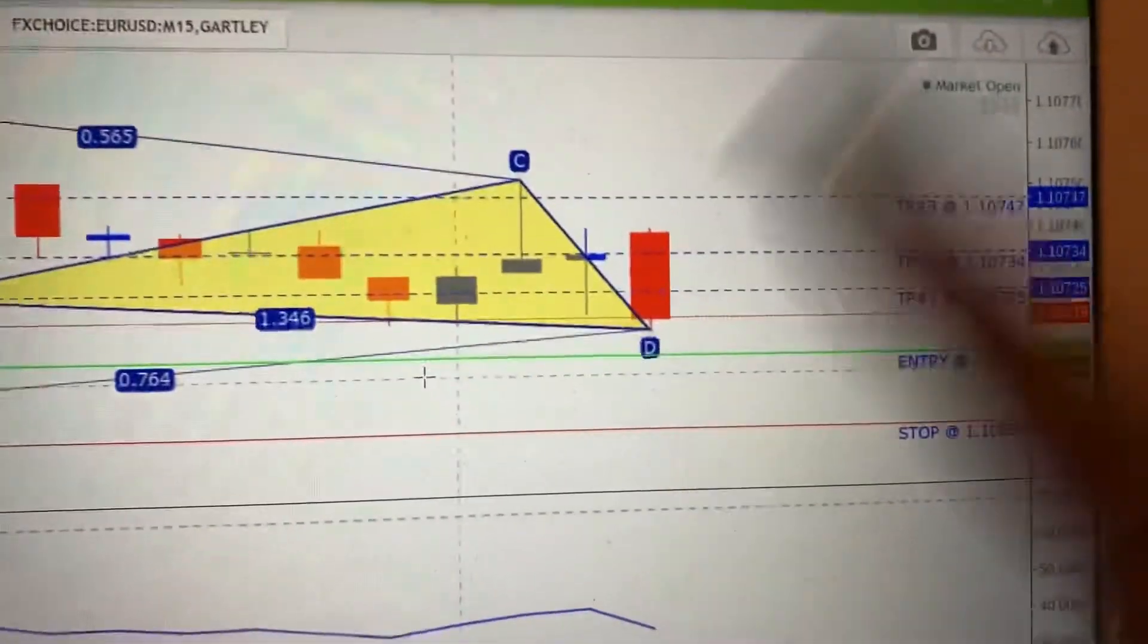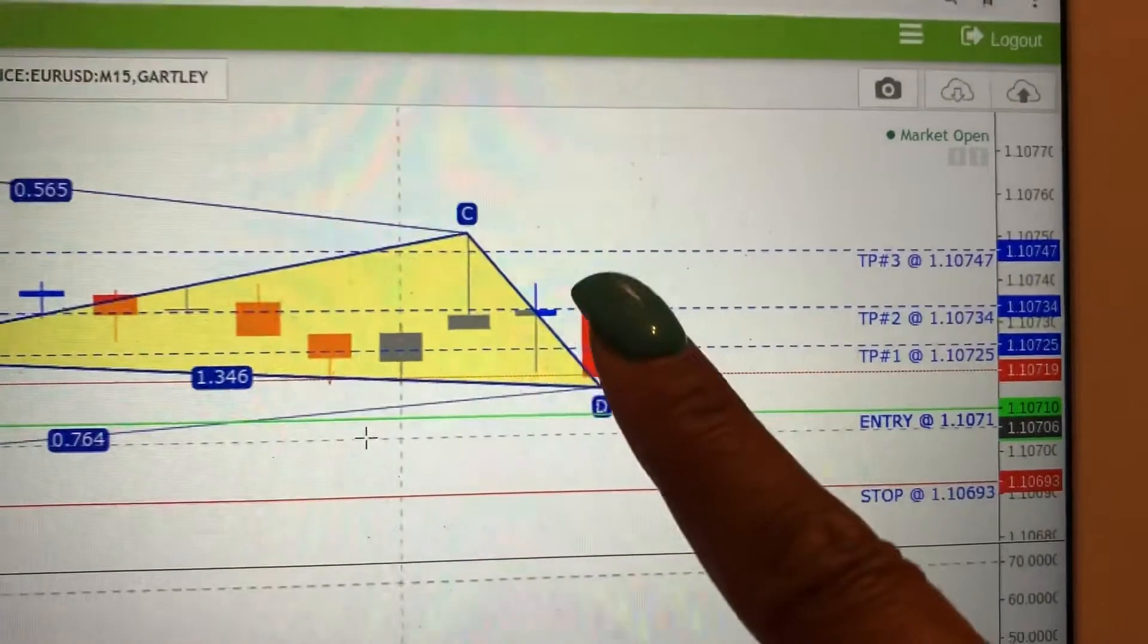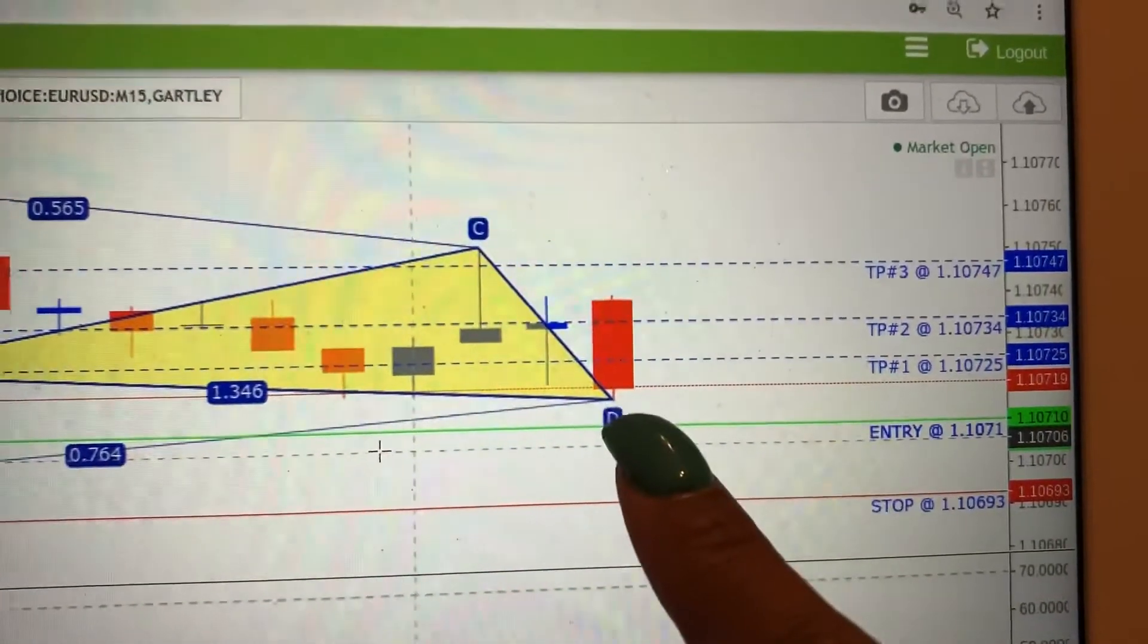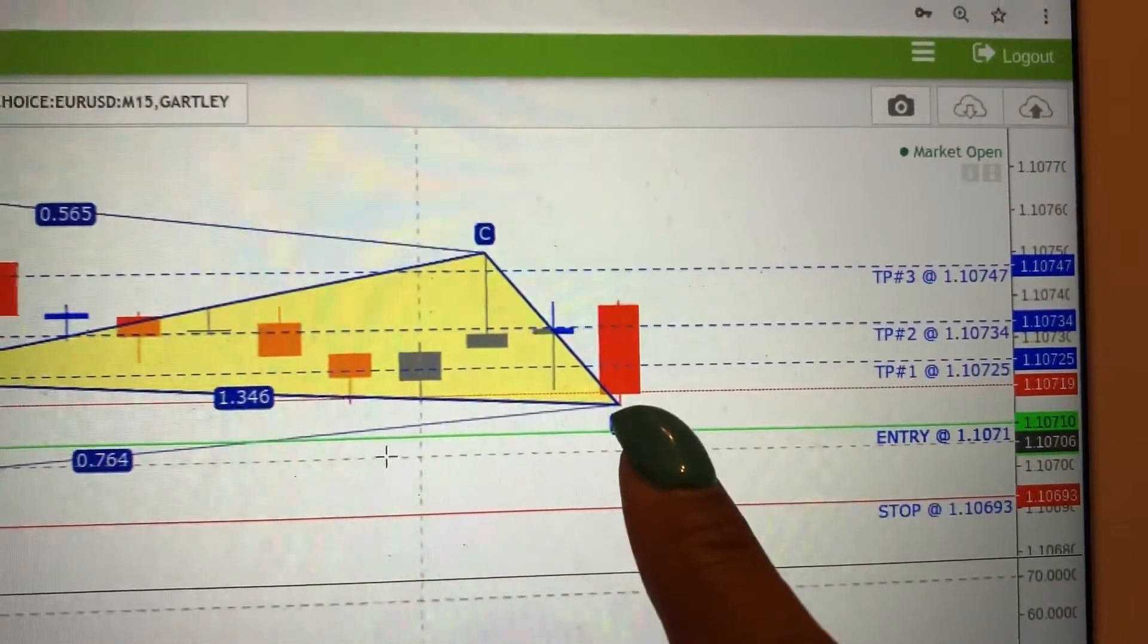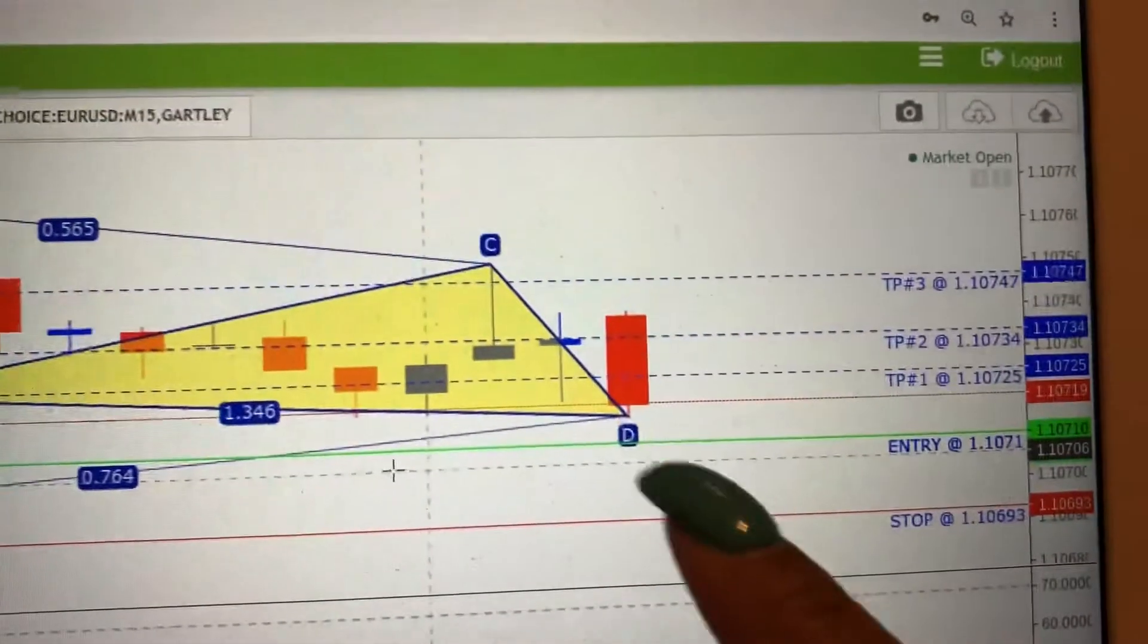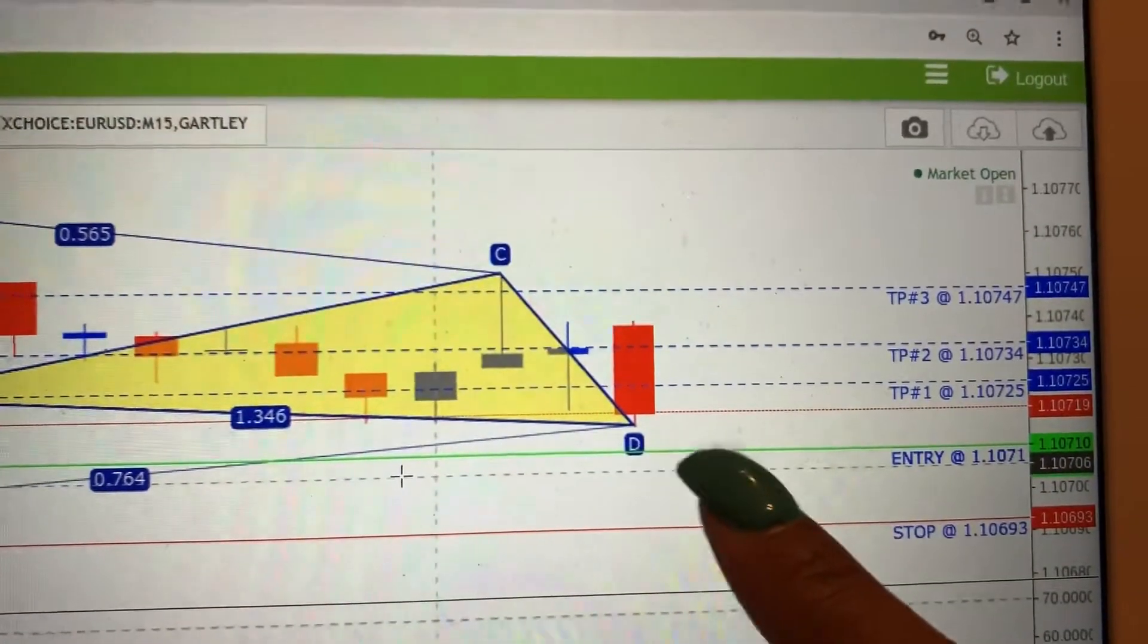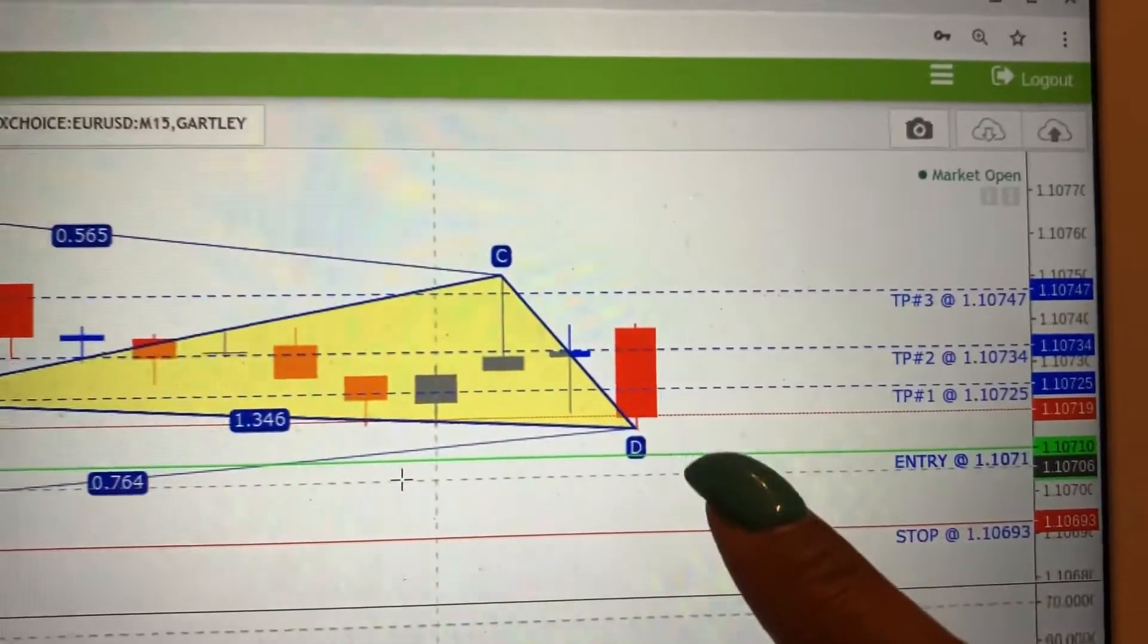This has not happened yet. This is perfect. Whenever you have the last candlestick at the D, from right at this D point on back, that's the end of a pattern. Now, everything else to the right of the D is the future.